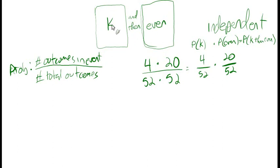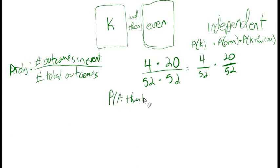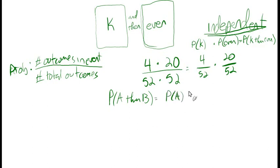You can recreate this experiment slightly differently — make it a ten, a heart, a number less than four, a red card — whatever you want. It's going to be the same thing: you multiply the two probabilities together. So the probability of any two events happening in sequence, if they're independent — if one thing does not affect the other — is the probability of A times the probability of B. That's the rule for independent events.